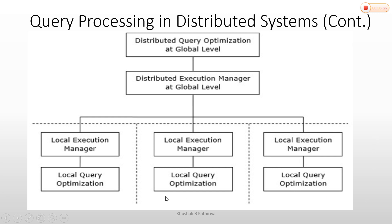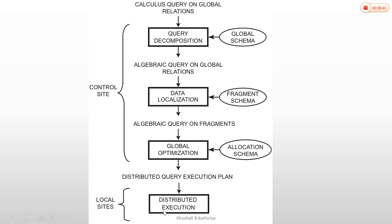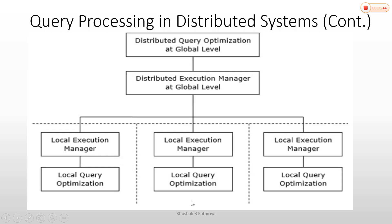The final phase is distributed execution. In a distributed system, we have a global level and a local level, with multiple sites and multiple structures. Each site locally executes and locally manages its portion. This is distributed query processing in a distributed system. Thank you.